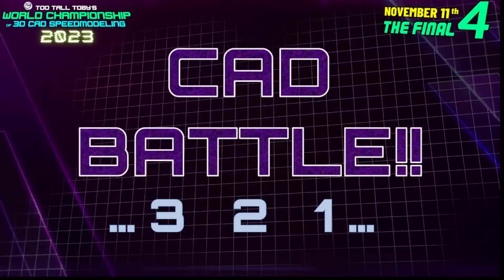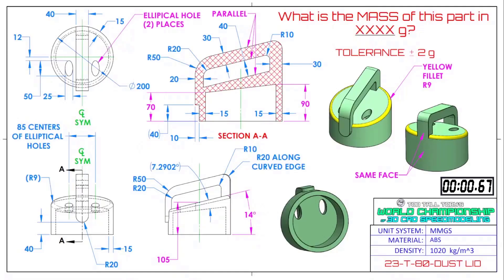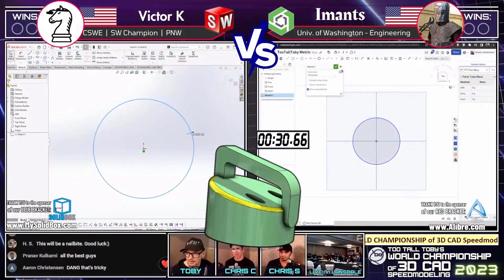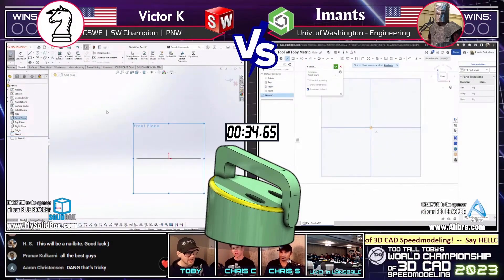Enough talk. This CAD battle between SolidWorks and Onshape begins in 3, 2, 1 — Go! What is the mass of this part in grams? The tolerance is plus or minus 2 grams. The yellow fillet is radius 9. There's a magenta note on that back face of this dust cap — it's the same face. This is inspired by the dust cap on my vacuum cleaner at home. The part is in millimeters, ABS. Both runners look like they're jumping into the software. Victor K on the left running SolidWorks, Imanz on the right running Onshape. I have a feeling this is going to go pretty quickly.